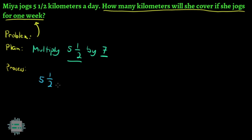We have 5 and one half multiplied by 7. So now, we have a mixed number multiplied by a whole number.